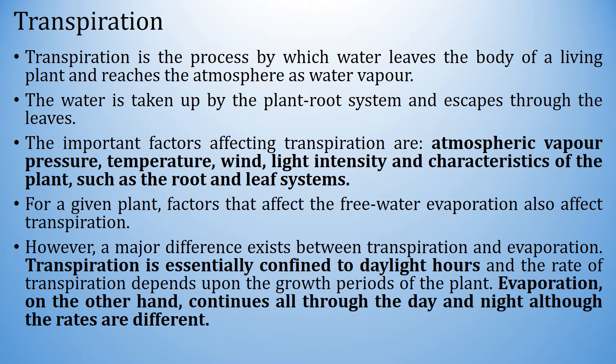What is transpiration? Transpiration is the process by which water leaves the body of a living plant and reaches the atmosphere as water vapor. The water is taken up by the plant root system and escapes through the leaves. The important factors affecting transpiration are atmospheric vapor pressure, temperature, wind, light intensity, and characteristics of the plant such as the root and leaf system. For a given plant, factors that affect free water evaporation also affect transpiration.